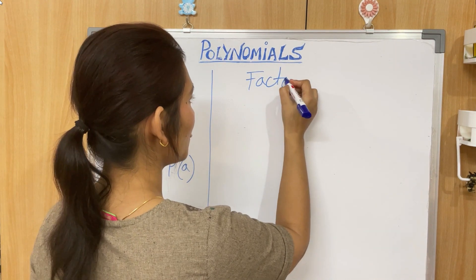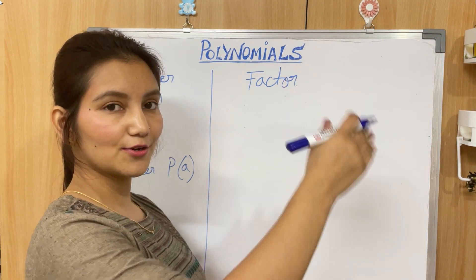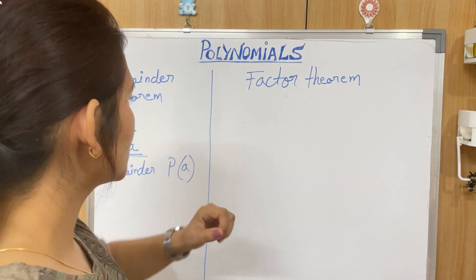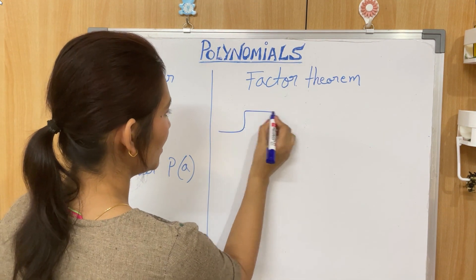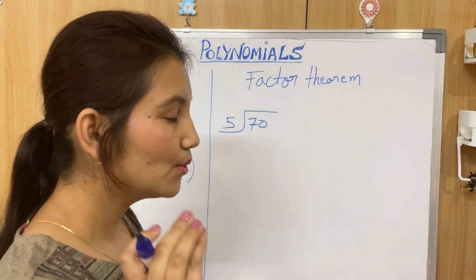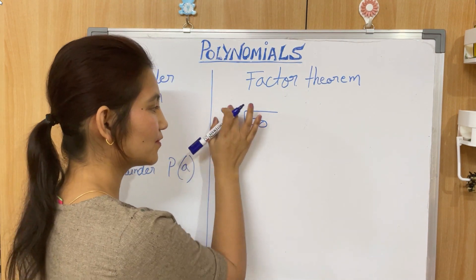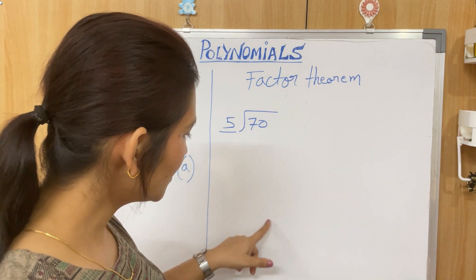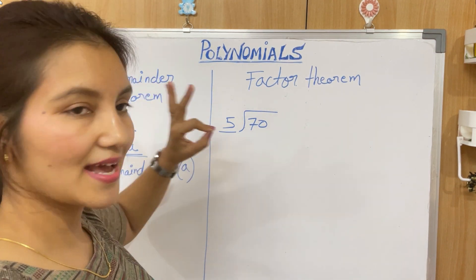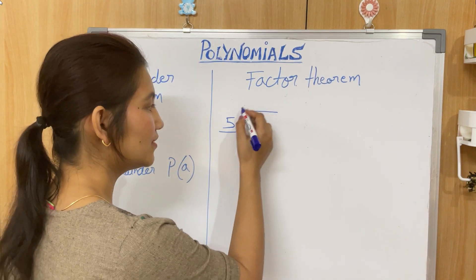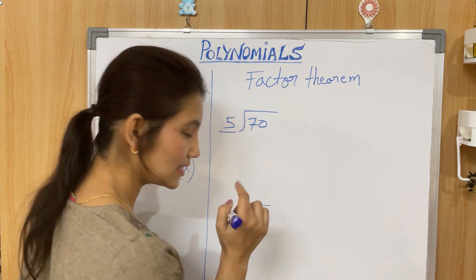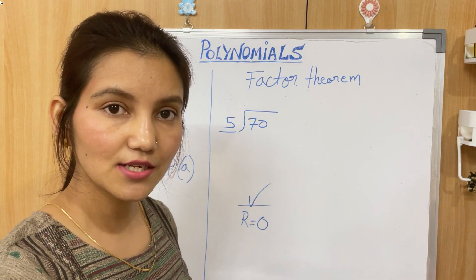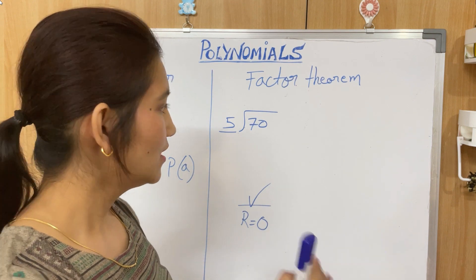Now let's come to Factor Theorem. Before I tell you the statement, let's do a simple exercise. If I ask you whether 5 is a factor of 70 or not, what would you do? You would divide 70 by 5. If the remainder is 0, you say yes, 5 is a factor of 70. If the remainder is not 0, then it is not a factor.